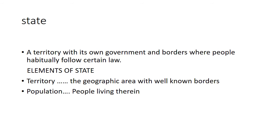The next element is population — the people who are living in that area. The next element is sovereign. Sovereign is the supreme authority that nobody could challenge. A state must have a sovereign, meaning it must have a supreme authority that nobody could challenge, so that law and order is ensured. If you remove sovereign, the state loses its character.